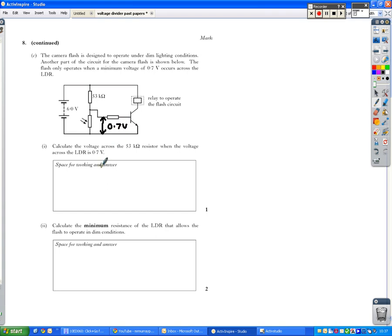Calculate the voltage across the 53 kilo-ohm resistor when the voltage across the LDR is 0.7. So the important thing to look for here is this bit. It's only one mark, so it's not going to be a calculation. Anytime you get one mark, you know, it's usually just going to be something that you can figure out through simple addition, subtraction, or maybe just in your head. Our total voltage here is 6 volts. If we've got 0.7 volts across here, we've got 5.3 volts that's missing somewhere.